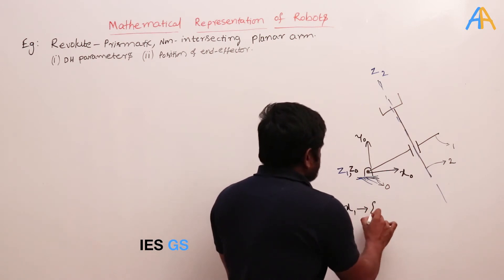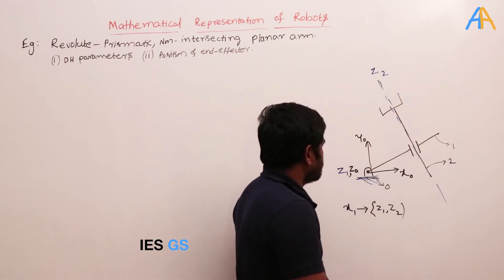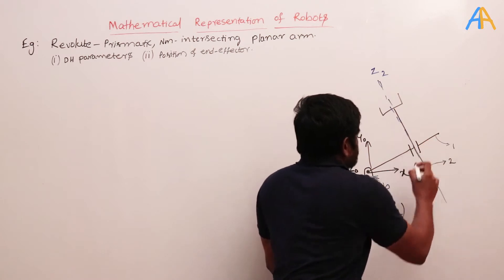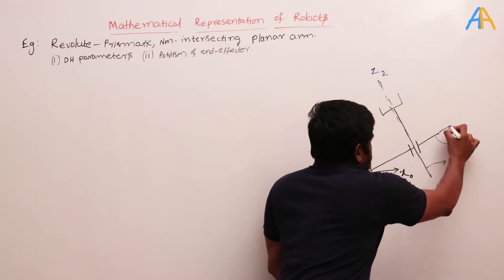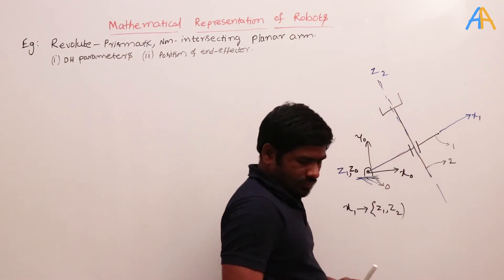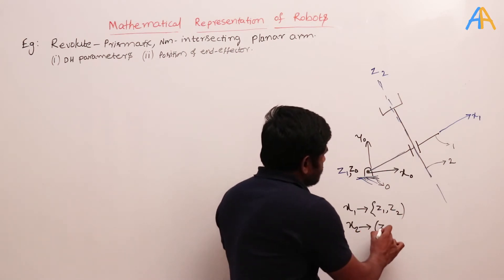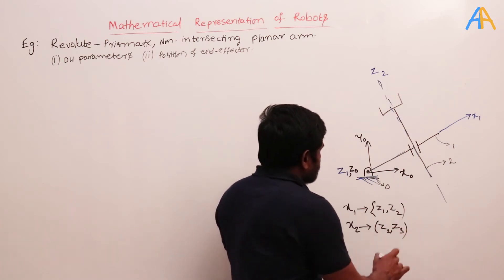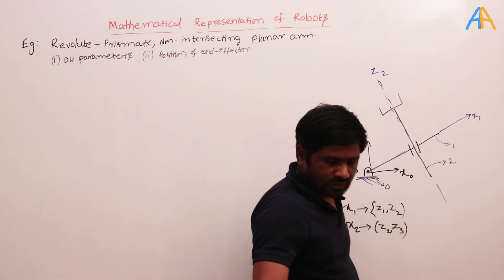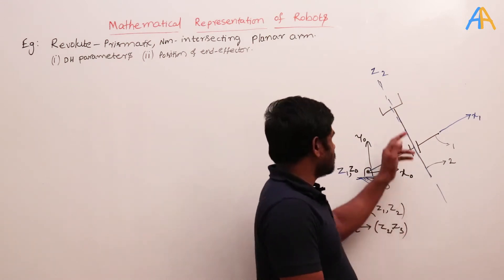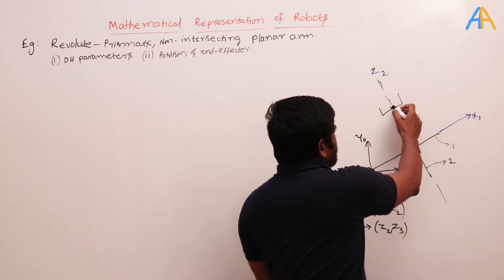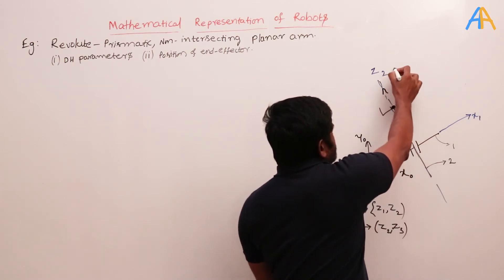x1 is the common perpendicular between z1 and z2. Here z1 is this axis and z2 is this axis, so x1 goes along this line — the perpendicular distance from z1 to z2. Now for x2, we need the perpendicular distance between z2 and z3, but there is no z3 yet, so we need to choose it. z3 is for the end effector or tool.